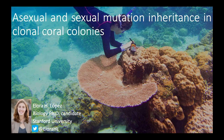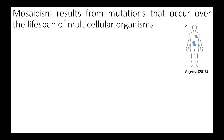Today I want to tell you about my studies on mosaicism. Mosaicism is a phenomenon in which the cells of a multicellular organism are not all the same genotype. This may sound strange at first, but it's actually incredibly common because mosaicism results from mutations that occur over the lifespan of multicellular organisms.